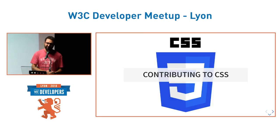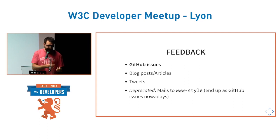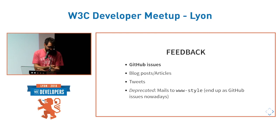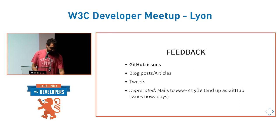The core of this talk is how you can contribute to CSS and have an impact on future features. There are different channels to provide feedback. The main channel nowadays is a GitHub issue — anyone who uses GitHub knows how to file one. You can also write a blog post explaining your problem, and if it reaches the CSS Working Group it can generate discussions. The same happens with tweets — sometimes a simple tweet ends up as a GitHub issue discussed by all CSS Working Group members. Sending emails to the www-style mailing list used to work, but nowadays someone will just tell you to file a GitHub issue instead.